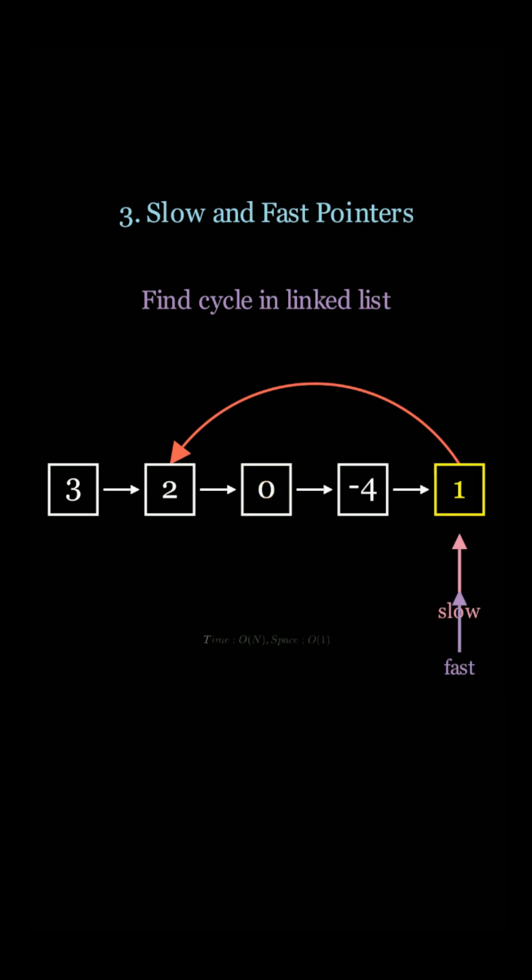If there's a cycle, they're guaranteed to collide eventually. This takes O of n time but constant space since we only keep track of two variables.